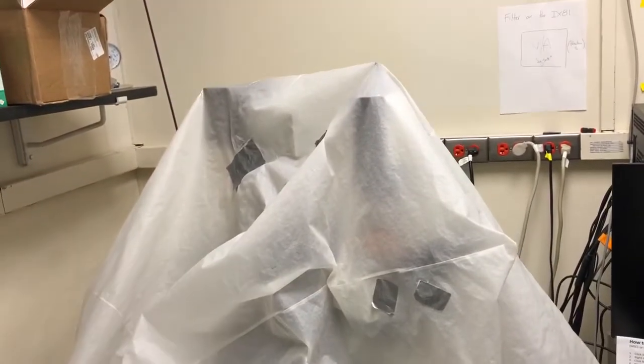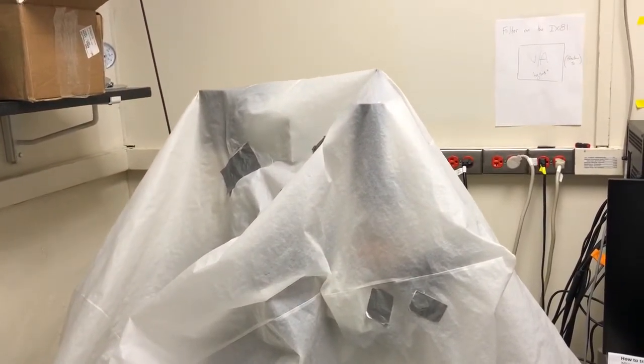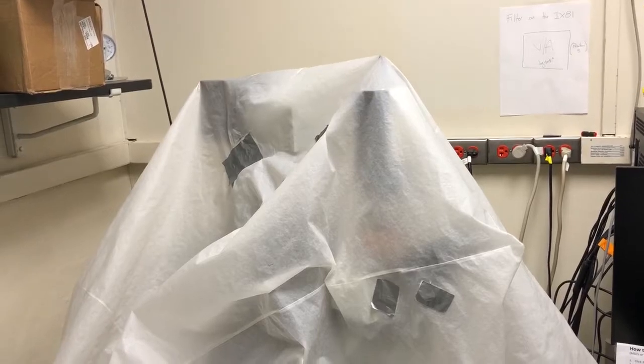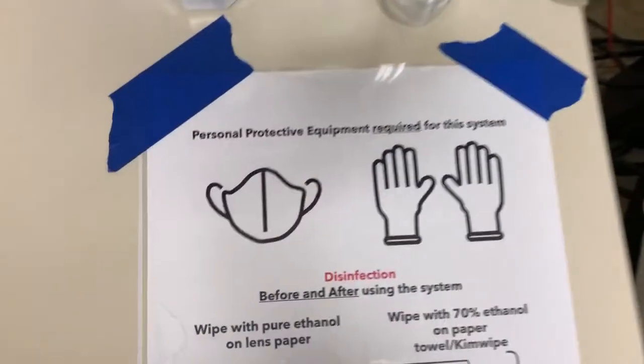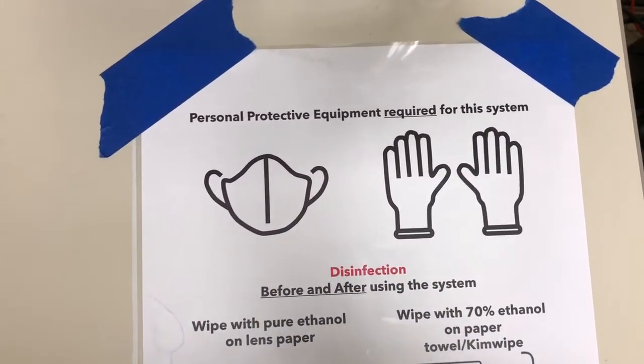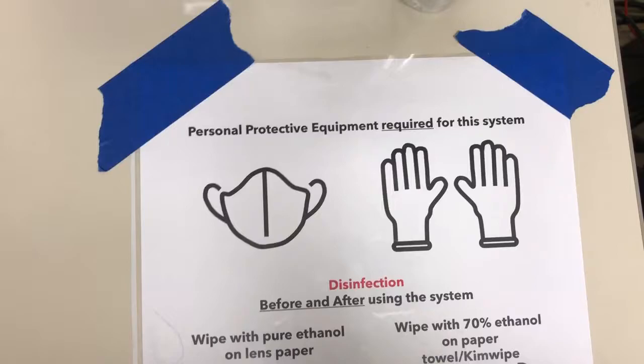Hi, this video is going to show you how to turn on the IX-81, or LUNA, microscope when you want to do fluorescence imaging. Before we can start, we need to make sure we have the proper personal protective equipment required for the system, which is a mask and gloves. So here are my gloves. I have my mask on.